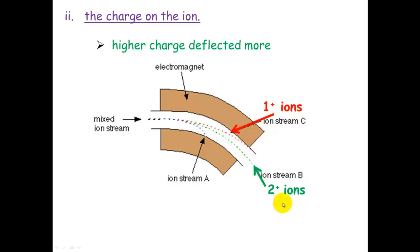The green one here are two plus ions. And hypothetically, the three plus ions would be deflected the most because they've got the greatest amount of charge. They're going to be attracted more to the electromagnet.